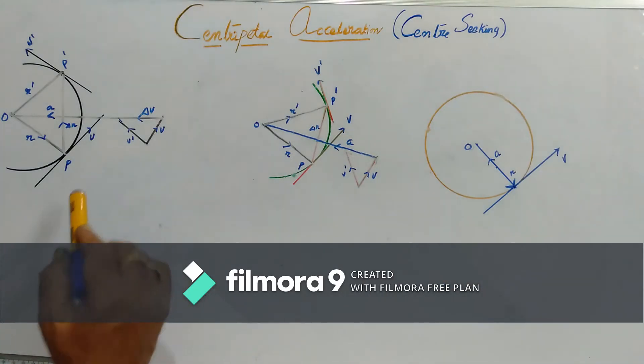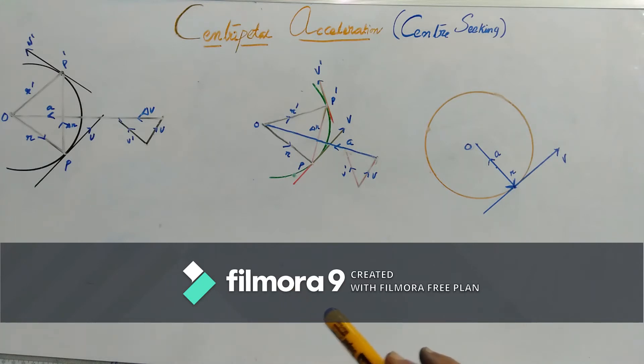Now we are aiming to derive an expression for the acceleration of that uniform circular motion. Why it will have acceleration? Because there is some change in velocity. Velocity not in the magnitude but in the direction.